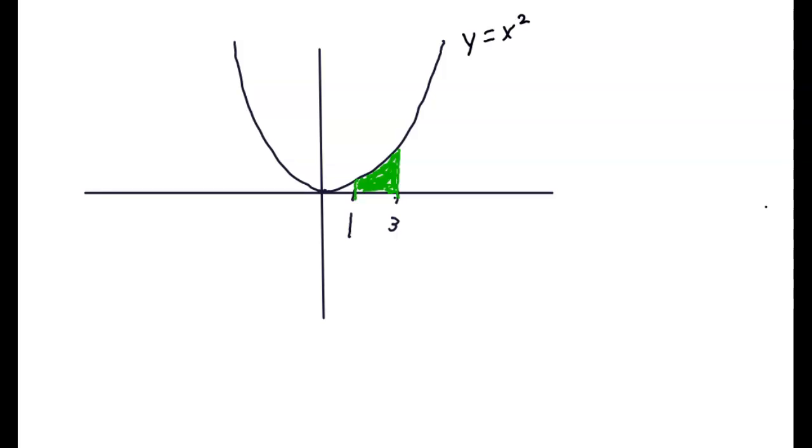All right guys, let's take a look at how to find the area underneath the curve. We're going to find the area under the curve x squared from x equals 1 to x equals 3.